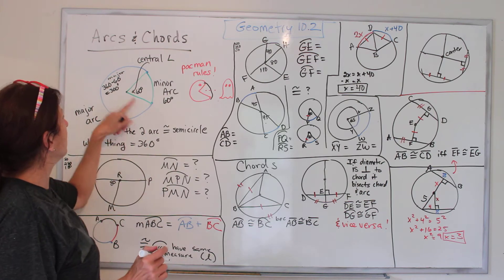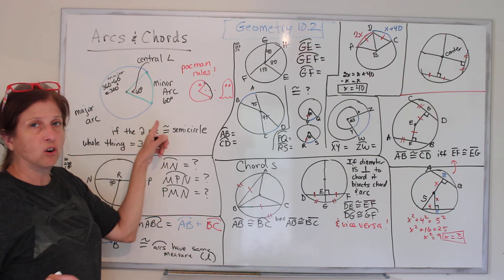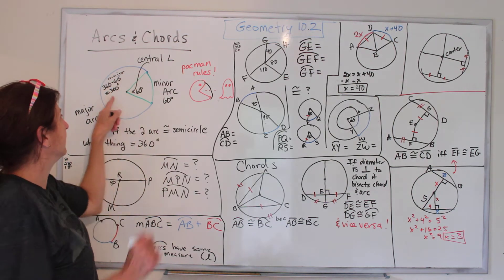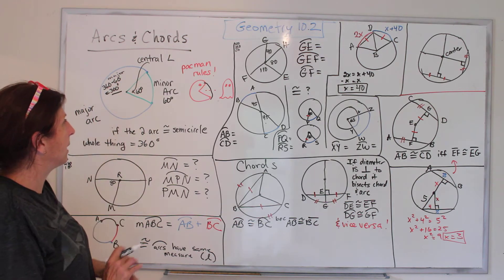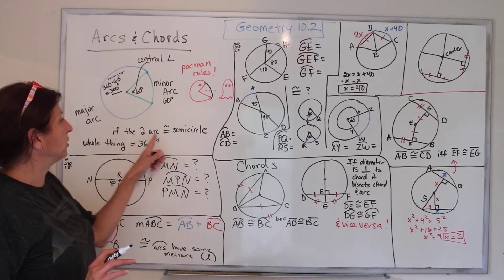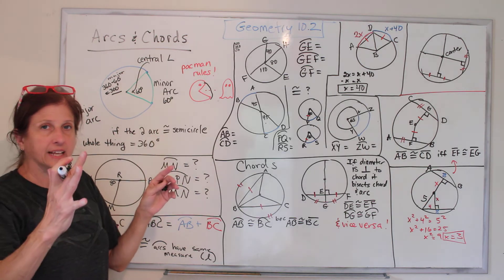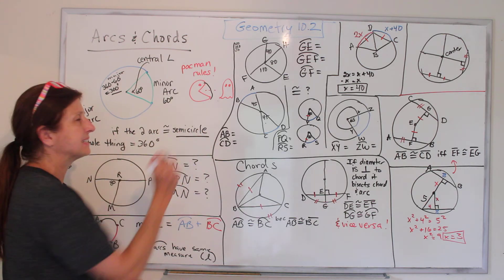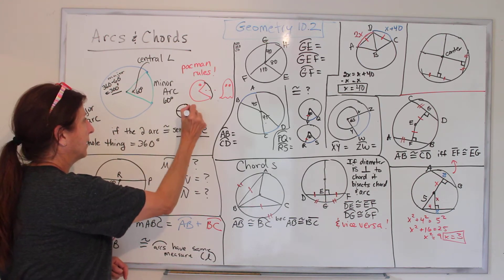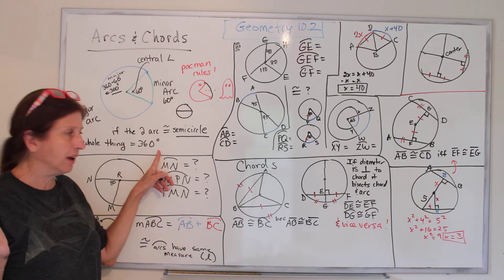If you add the minor arc and the major arc, you get 360 degrees, the full circle. So if we were given the minor arc and were asked for the major arc, we would subtract 360 minus 60 is 300. So that's our major arc. If the two arcs are equal, they're called semicircles because they're half a circle. Pac-Man got divided in half. The whole thing is 360.